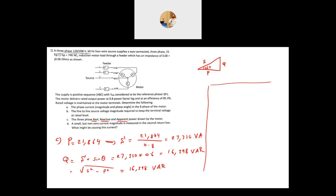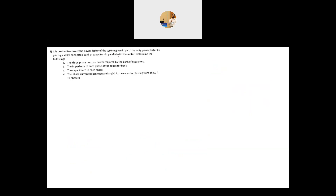There is a conceptual question: a small but non-zero current is measured in the neutral. For a purely balanced system, the neutral current would be zero. A small current exists because of imbalance among the three phases — specifically, the impedances Z_A, Z_B, and Z_C of the motor will not be exactly equal in practice, causing a slight imbalance. Imbalance in the supply voltages could be another reason.